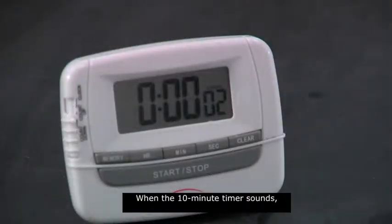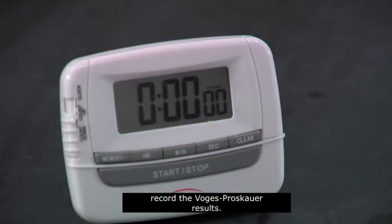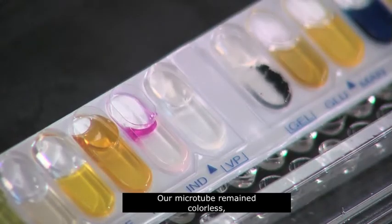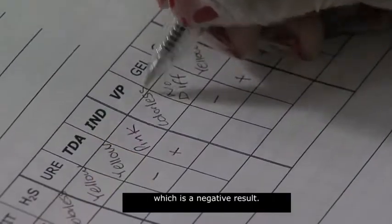When the 10-minute timer sounds, record the Vogue-Proskauer results. Our microtube remained colorless, which is a negative result.